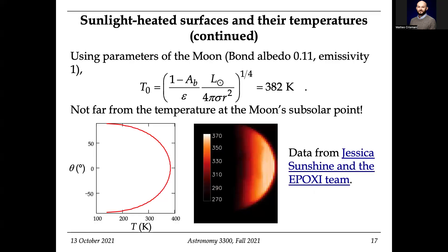Let's see what this looks like for the Moon. Using the Moon's bond albedo of 0.1 and emissivity of 1, this is what it should be at the sub-solar point — 382 degrees Celsius. Let's look at the data. This data is from Dr. Jessica Sunshine. It says 370 degrees — that's really good! I calculated 382. And notice what happens as we go off to the sides: it gets cooler. It's about 300 degrees at about 50 degrees latitude, which kind of makes sense.